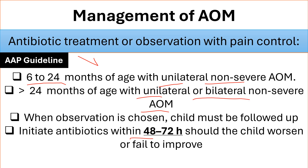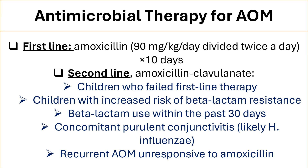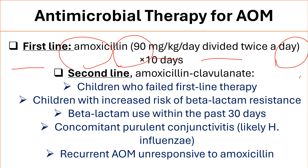Initiate antibiotics within 48 to 72 hours if the child worsens or fails to improve. The first-line treatment for acute otitis media is amoxicillin, high dose 90 mg per kg per day divided twice a day, for 10 days. Less than 10 days is not optimal for treatment of acute otitis media.